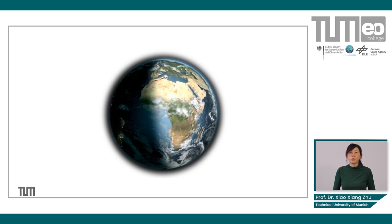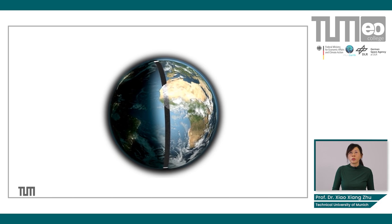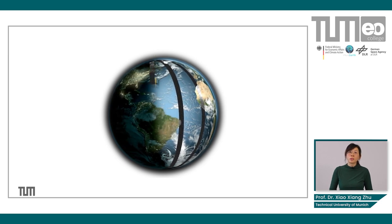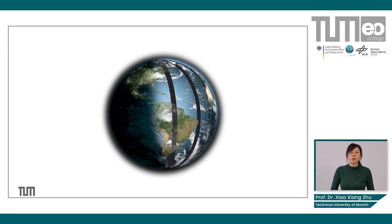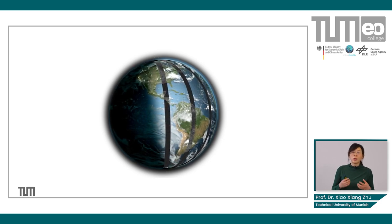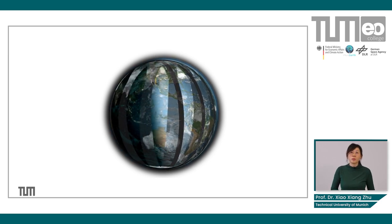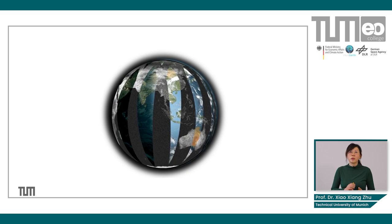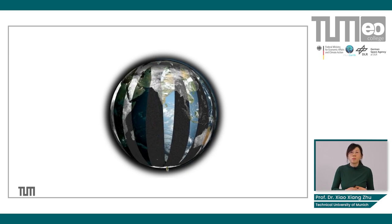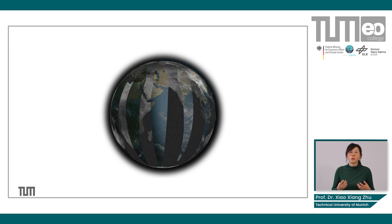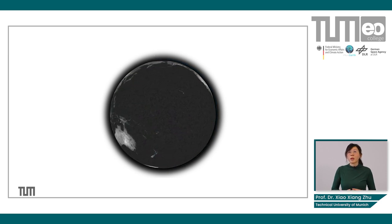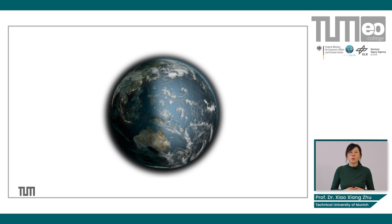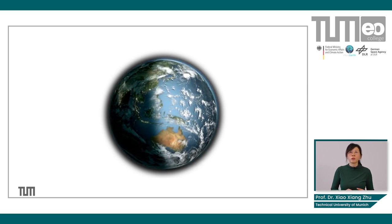Since the whole course is about Earth Observation, I will first show you a video to bring everybody to the same page. In Earth Observation, we are working with satellites, typically low Earth orbit satellites. They are orbiting the Earth and making measurements of the Earth's surface. While satellites are orbiting, the Earth itself is also rotating. In this manner, we are able to get measurements of the entire Earth. Also, if the sensor steers to a certain geolocation, it is possible to get very high resolution measurements of the Earth's surface.